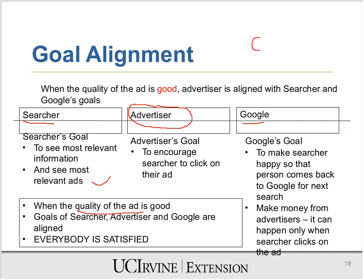CTR stands for click-through rate. The more people who click on an ad, the less money you're going to pay. So it is in your interest to provide a good ad — because of that, you pay less money, and more people click on your ad so you make more money. Your CPC cost also goes down. Google gave an incentive to advertisers to have very high-quality ads. When Google introduced the concept of CTR, Google AdWords became very successful.